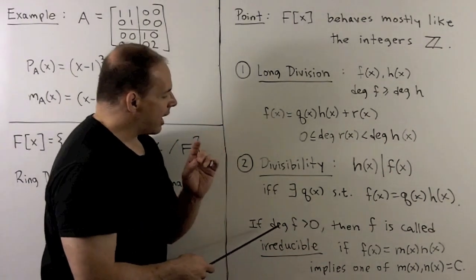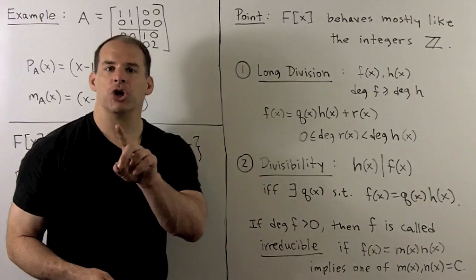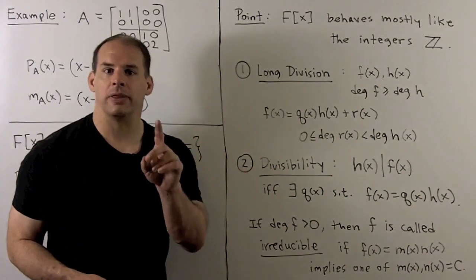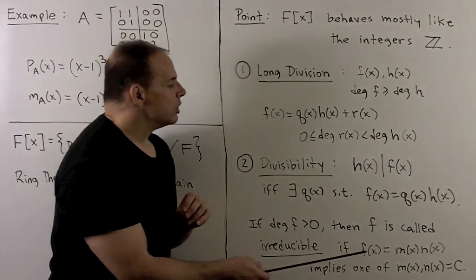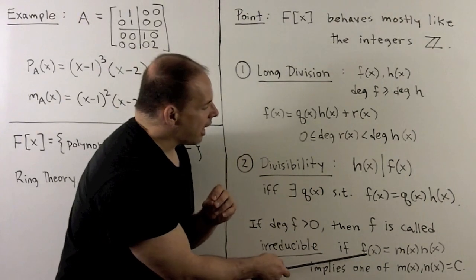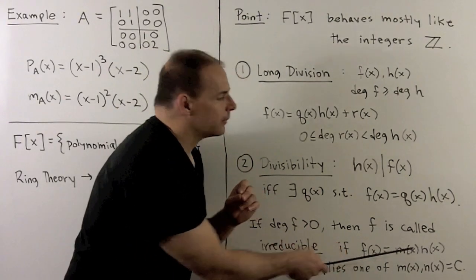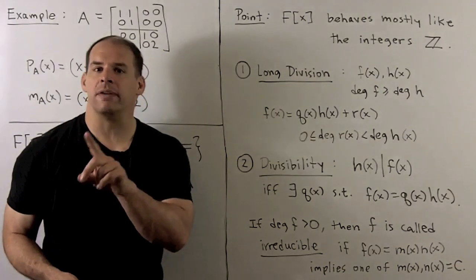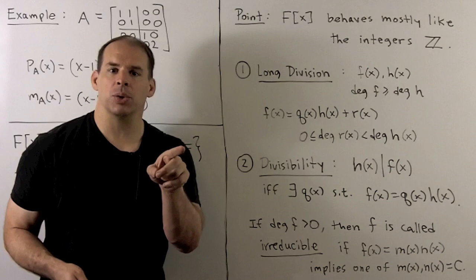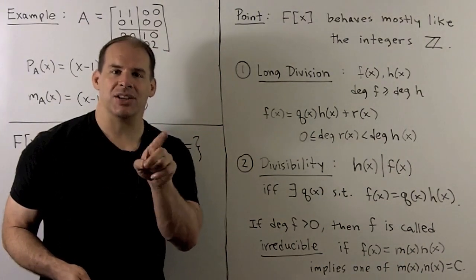From there, when I have degree of f positive, we can consider the version of prime integers for polynomials. We'll call these irreducible polynomials. So we'll say a polynomial is irreducible if whenever I break up f as a product, m(x) times n(x), that implies at least one of m or n is equal to a constant. So we can't split this into two polynomials that have positive degree.